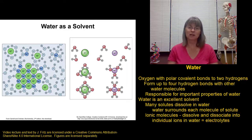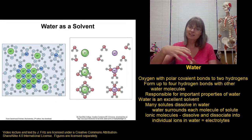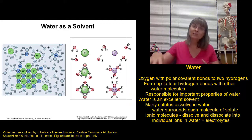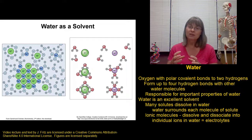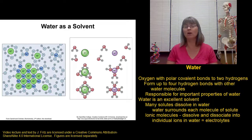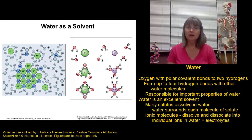The negative oxygen end of a water molecule is attracted to the positive sodium ions, so water molecules surround each individual sodium ion, preventing it from interacting with chloride. Similarly, the positive hydrogen ends of water are attracted to the negative chloride ions, surrounding each chloride and keeping it from bonding to sodium. This is why ionic bonds aren't very strong in water — water surrounds each individual ion so they can no longer bond to each other. The sodium chloride dissociates into separate sodium and chloride ions. Ionic molecules like this dissolve and dissociate — they separate into their individual ions in water.